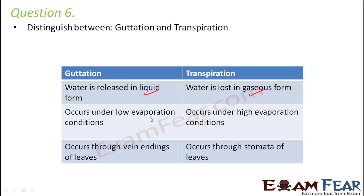Guttation occurs under low evaporation conditions — high temperature or similar conditions are not required. Transpiration, however, requires evaporation conditions similar to those needed to boil and evaporate water. Guttation occurs through vein endings of leaves, so you often see droplets towards the vein endings, whereas transpiration occurs through stomata. You can observe guttation for yourself during early morning in your garden.